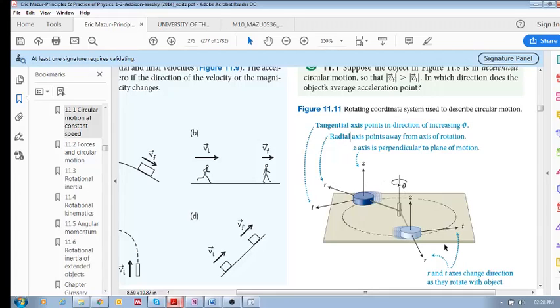And then there's also a third axis which is perpendicular to this one. Remember, these are all perpendicular, right? So R and T are perpendicular, T and Z are perpendicular, R and Z are perpendicular. Z axis is perpendicular to the plane of motion.